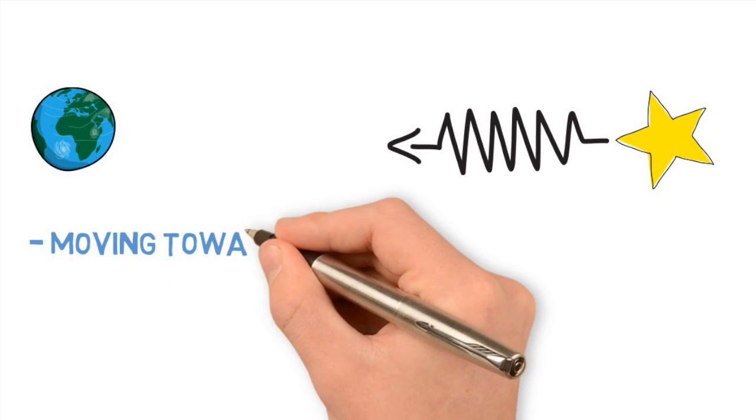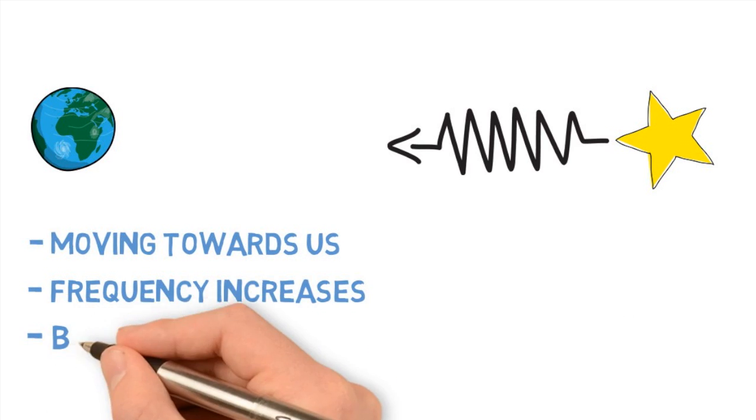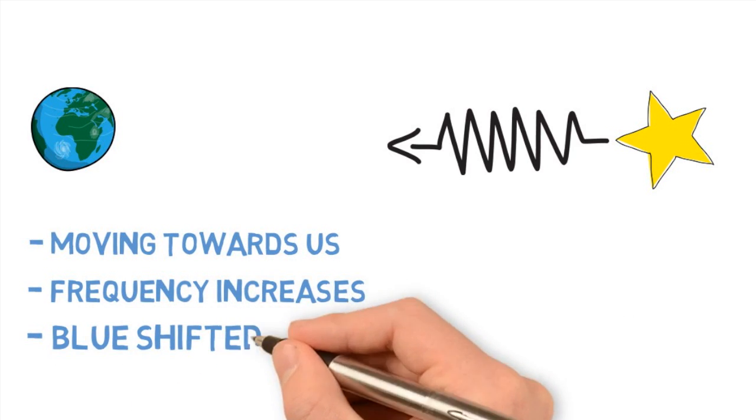Similarly, if the star is moving away, the radiation emitted is lengthened or red shifted because the visible light is at the red end of the spectrum.